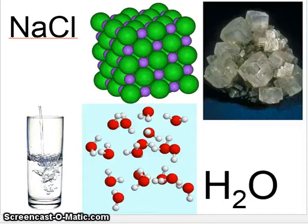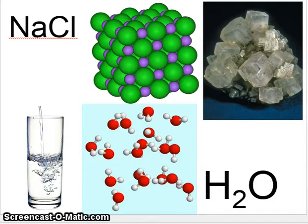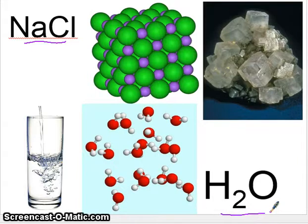This is Lesson 2 of Chapter 6. In this lesson, we'll talk a little bit more about ionic and covalent bonding. There are two types of compounds that can form: ionic, like sodium chloride, table salt, and covalent, like water. We're going to take a look at both of these in more detail.